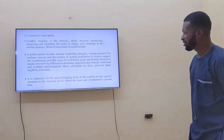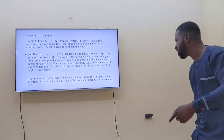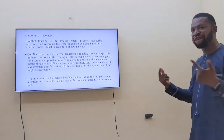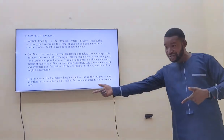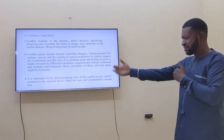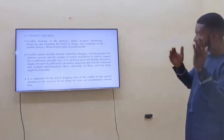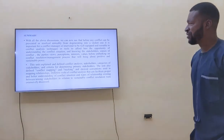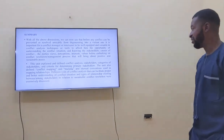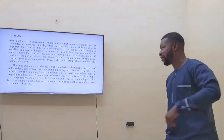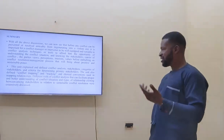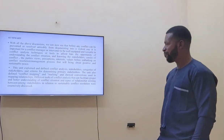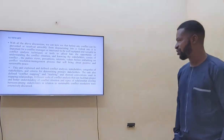Conflict tracking is a process which involves monitoring, observing, and recording the trend of change and continuity in the conflict process. Every conflict is dynamic — it might be affecting one party, then shift to another. Conflict tracking monitors the dynamics, records the disparities, and identifies who is at a loss or who has the advantage. It is important for a conflict manager to be well equipped with the skill of conflict analysis, as it affords them the opportunity to understand the conflict situation — the stakeholders, the causes, the parties' views, perceptions, interests, and values — before embarking on the conflict resolution process.